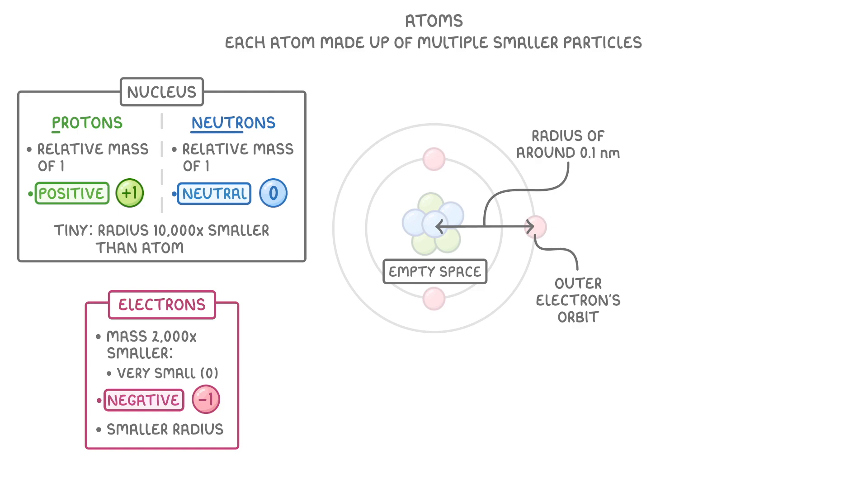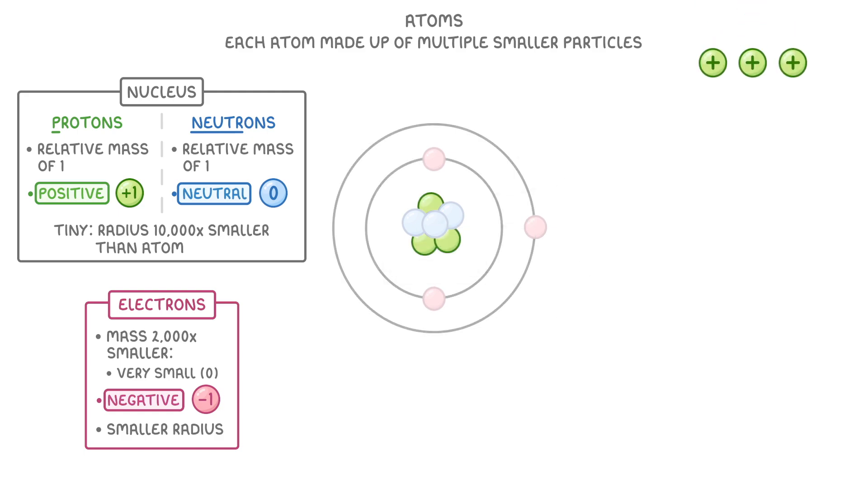In this atom that we've drawn, we have three protons in the nucleus and three electrons orbiting it. Because the number of protons and electrons is equal, the positive and negative charges balance out, and so overall the atom is neutral.